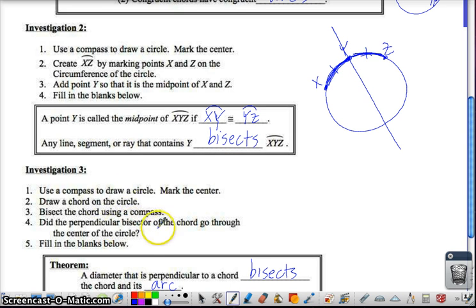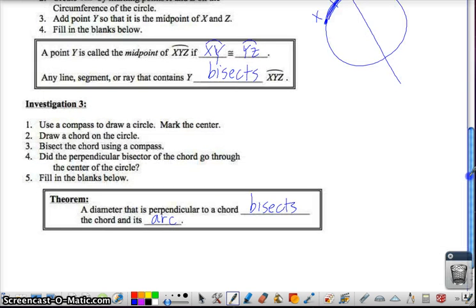Investigation 3, do this one on your own, then figure out the theorem. So push pause now if you want to do it on your own and you haven't yet, or if you've already done it, you can go ahead and move forward toward the theorems. So a diameter that is perpendicular to a chord, okay, so here's a circle.